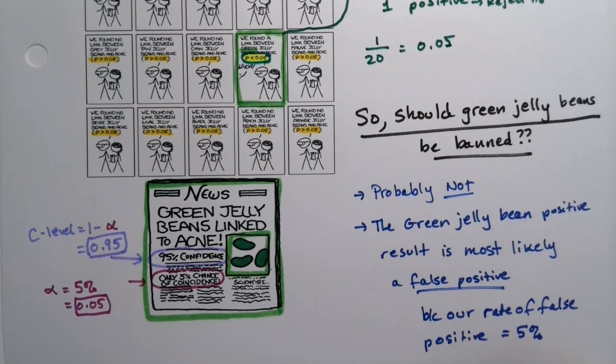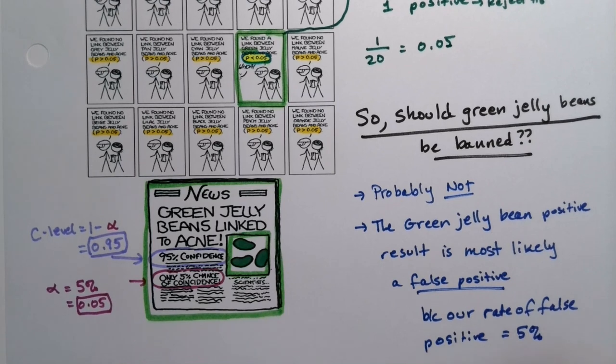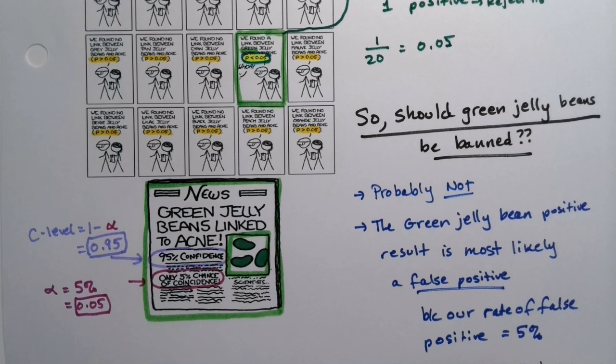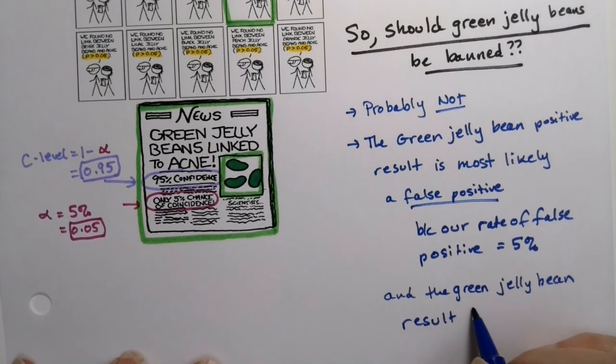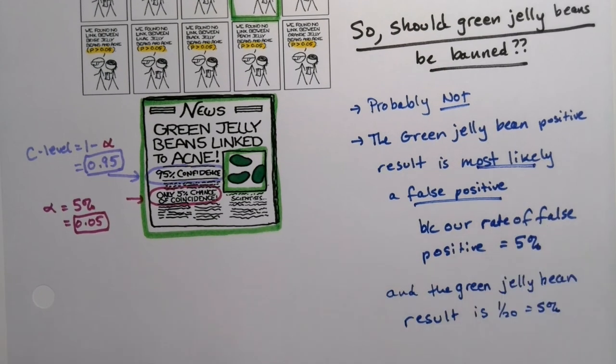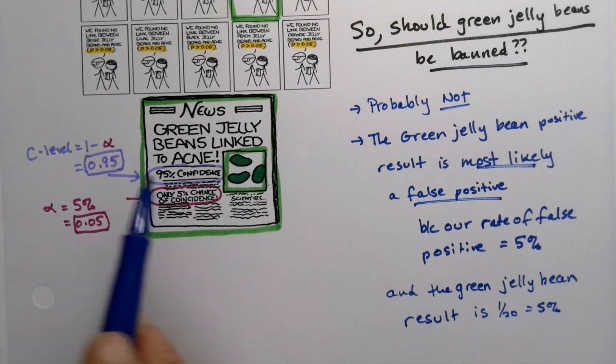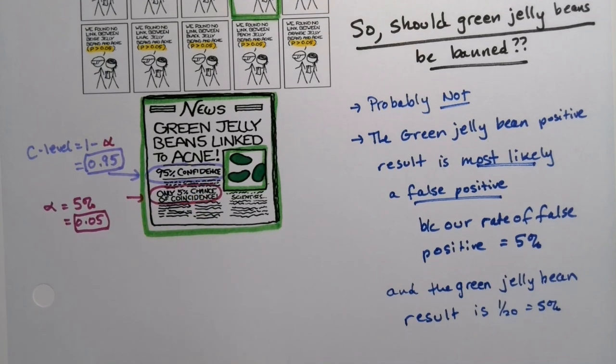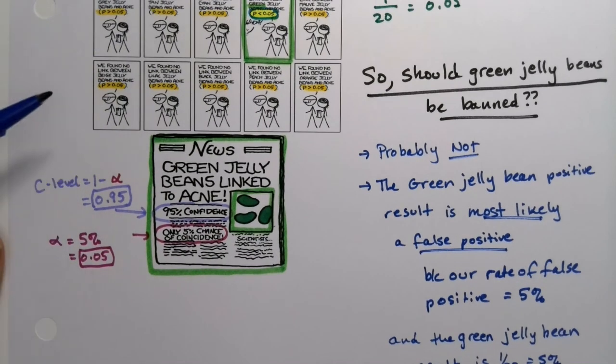But if they don't tell you that, yeah, we did it 20 times and only one of them came out this way, then that's within our threshold of 5%. That's probably a false positive, right? So because our rate of false positive is 5%, and the green jelly beans result was 1 out of 20, it's most likely that that green jelly bean is not a real result. And it should definitely not be proclaimed in the news like this. And this stuff happens all the time. This is why you see, you know, coffee is bad for you. Coffee is good for you. Coffee is bad for you. Science is just doing its thing, but people read those results and read more into them than they should, right? They see 95% confidence and they kind of make that, well, then it's certain.